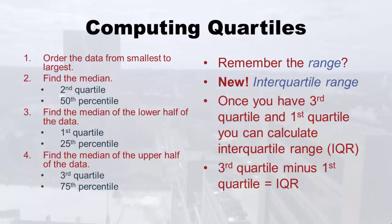Step four, which you probably guessed, is you find the median of the upper half of the data between the median and the maximum — and that's your 75th percentile. Now, remember the range: that was the maximum minus the minimum. We have something new and improved: the interquartile range. Once you have the third quartile and the first quartile, you can calculate the IQR — the interquartile range — which is the third quartile minus the first quartile.